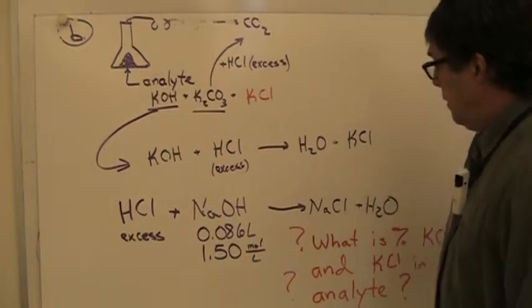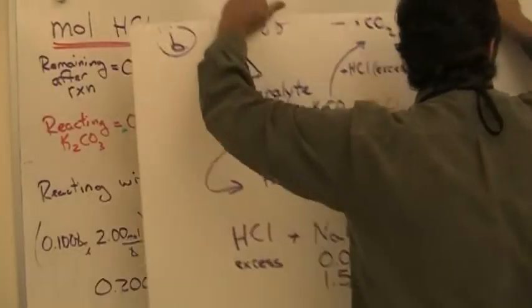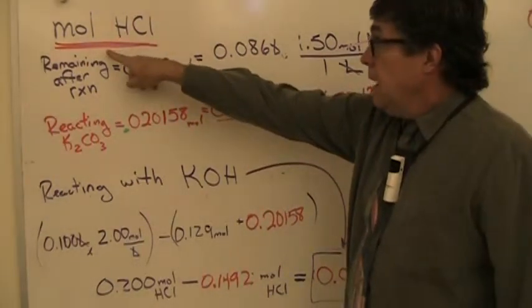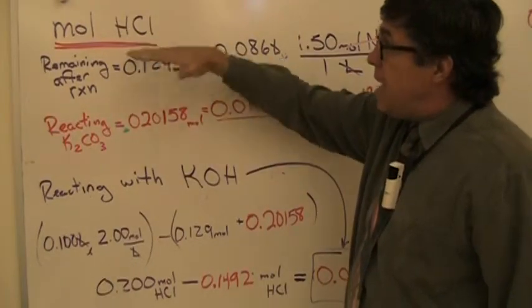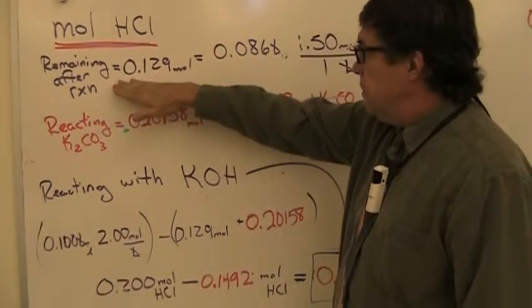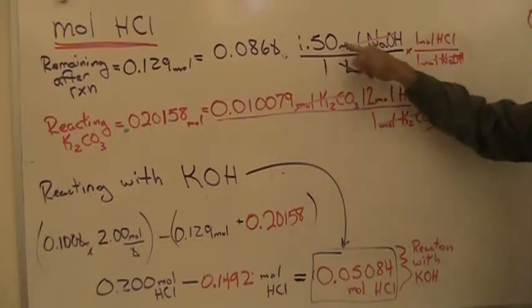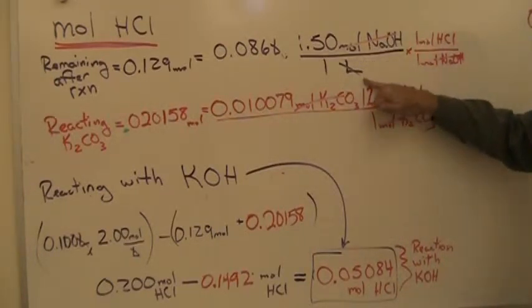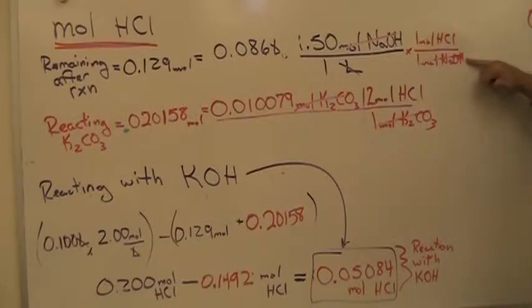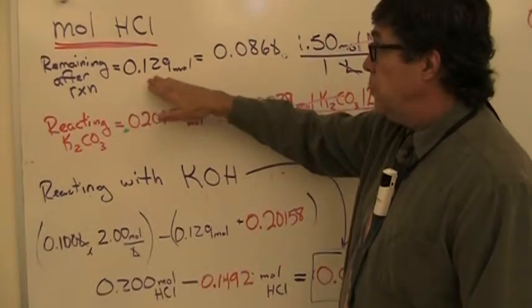That's how much excess hydrochloric acid there was after the other two reactions occurred. Now we should be able to answer the percentage of potassium hydroxide and potassium chloride in the analyte. I'm tallying up all the things that hydrochloric acid were used for. After the mixture, there was the 86 milliliters of base that had a concentration of 1.5 moles per liter, and there's one mole of HCl for every one mole of sodium hydroxide. That tells me that after both of these reactions occurred, I still had 0.129 moles of hydrochloric acid left.